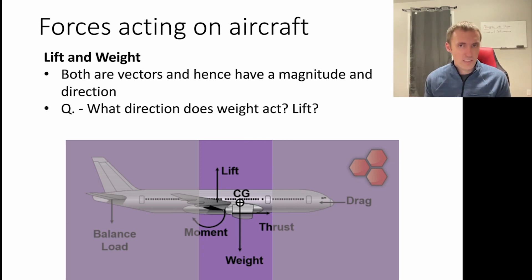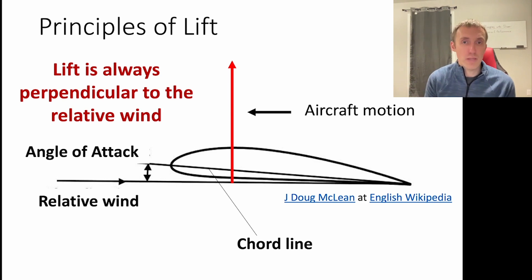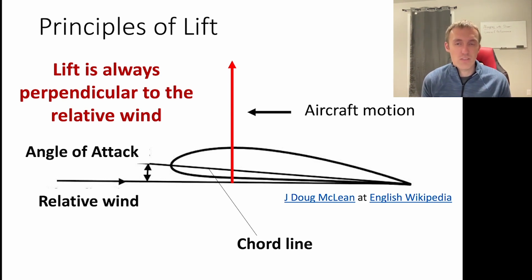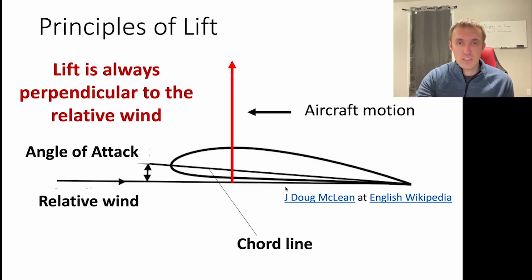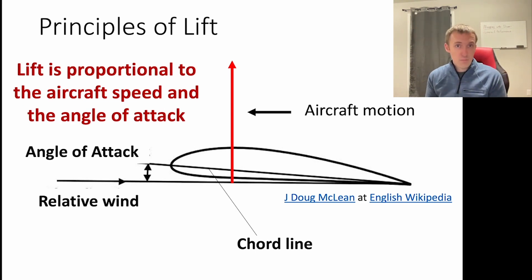A question to ask is: what direction do these two forces act? Lift is going to always be perpendicular to the relative wind — whichever direction the relative wind is, lift will be perpendicular to it. So in this particular example, lift is exactly vertical, going up perpendicular to the relative wind and the aircraft motion. Lift is proportional to the aircraft's speed and the angle of attack — the faster the aircraft goes, the more lift you'll be able to generate.